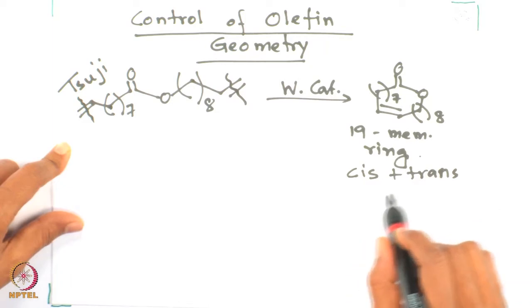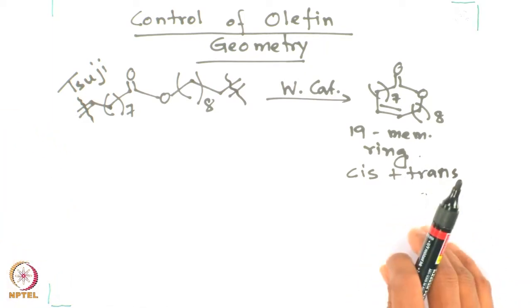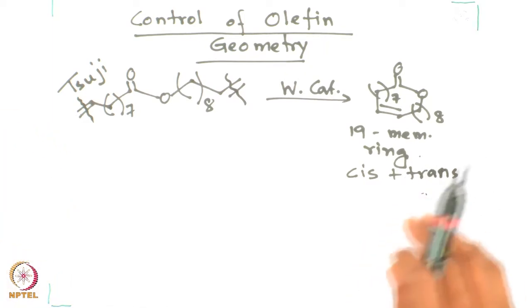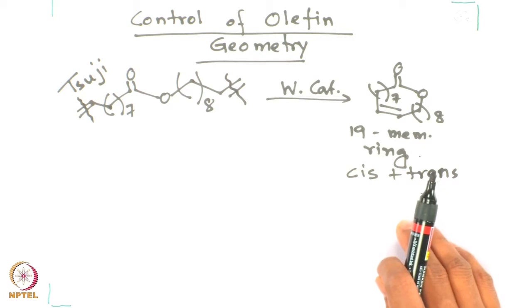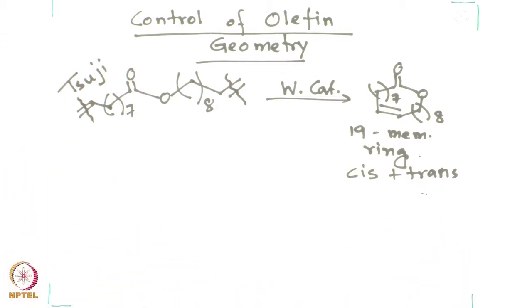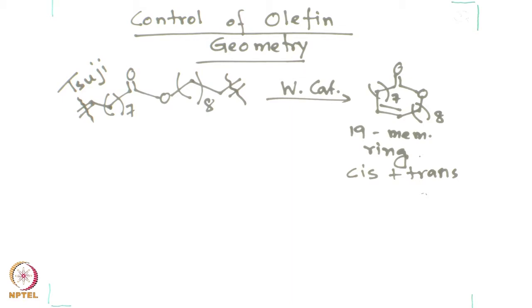However, in these cases it gives a mixture of cis and trans product. There are not too many ways to control cis and trans product formation. One way to control the geometry could be reacting with an alkyne instead of an olefin.